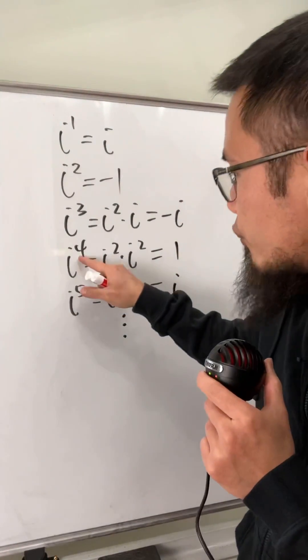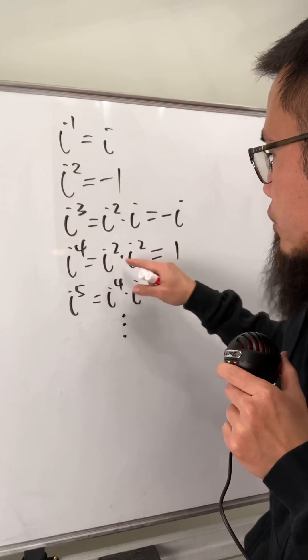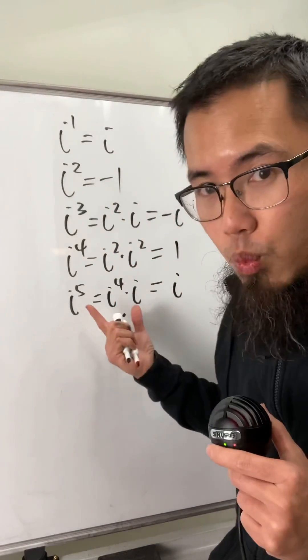And if we continue, i to the fourth power, this right here, look at this as i squared times i squared, which is just negative 1 times negative 1, well, we just get 1, right?